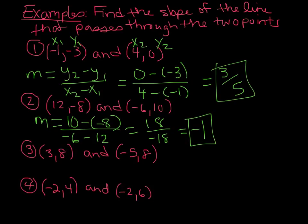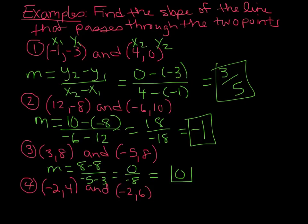For number 3, you might notice something weird is going on. You are going to get 0 over negative 8, which we write as a slope of 0. If you were to draw those two points, you would find that they give you a horizontal line.